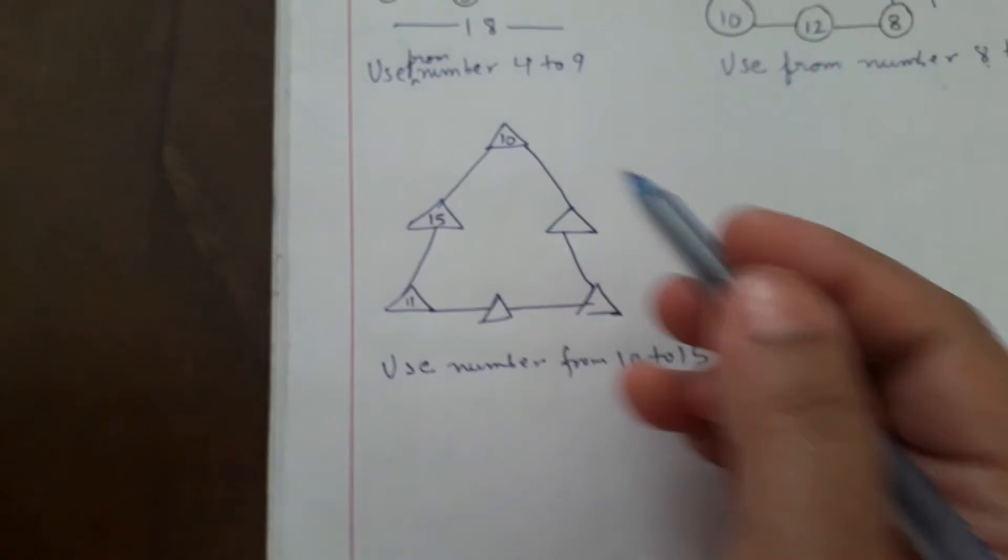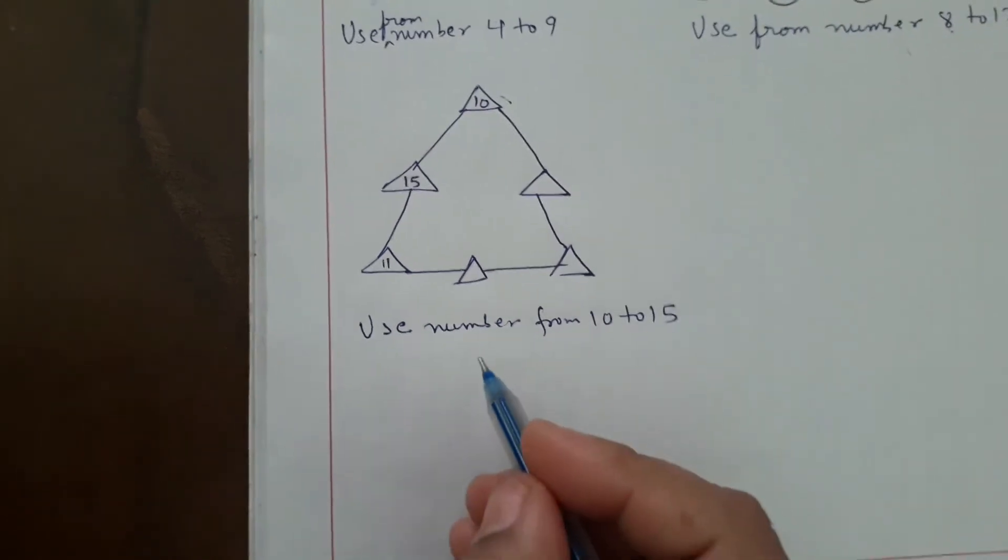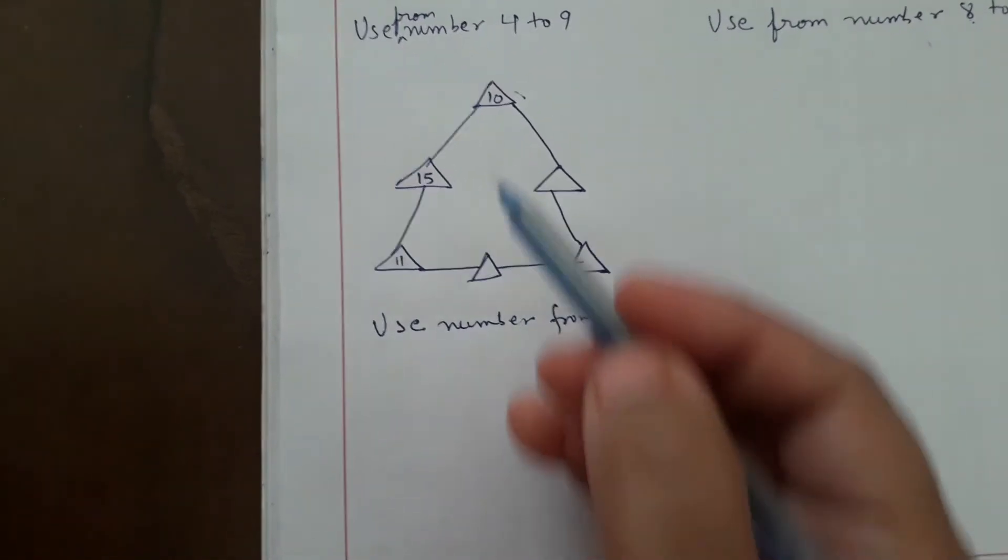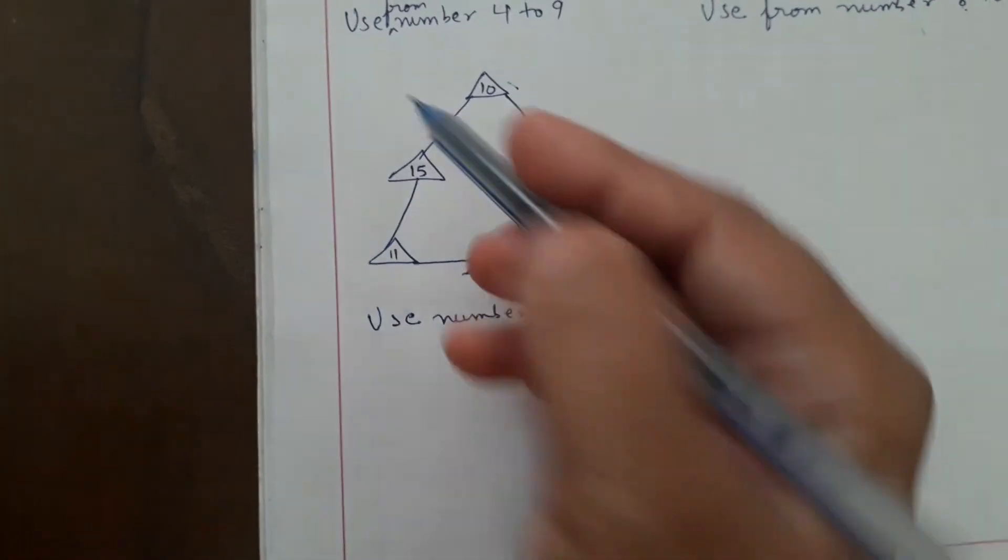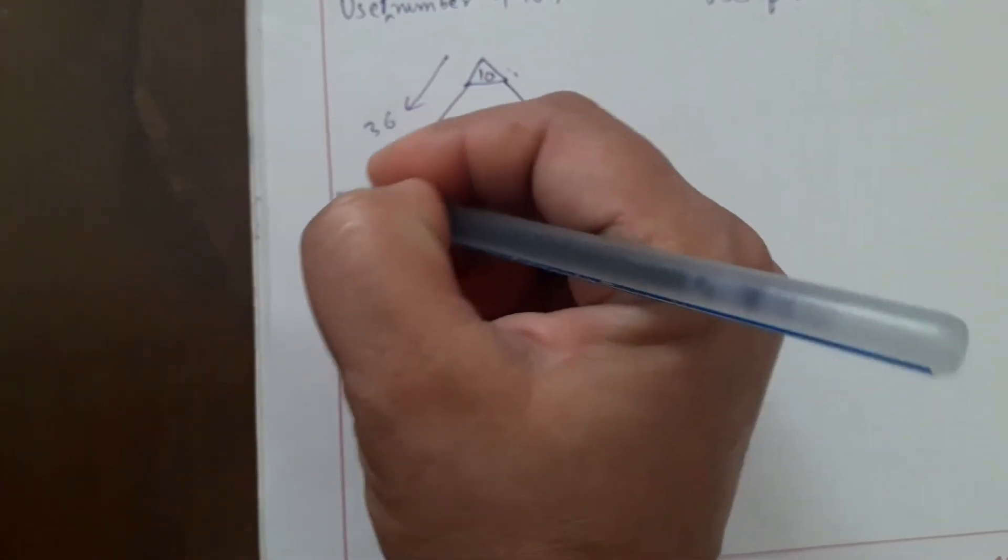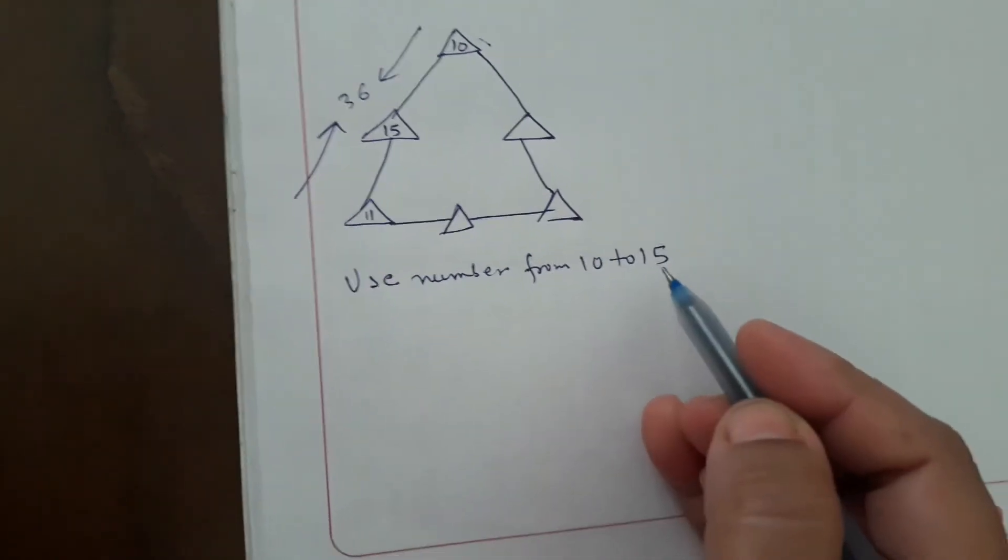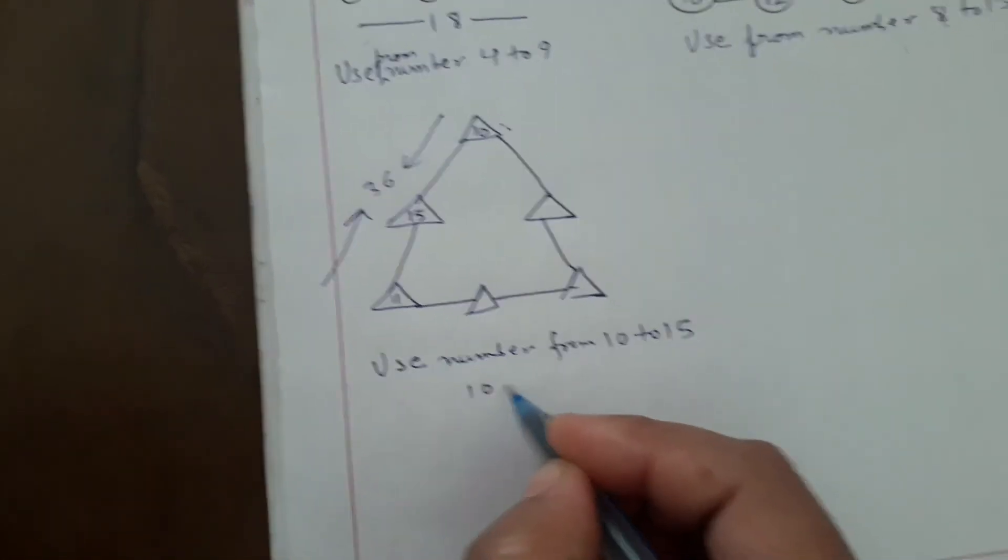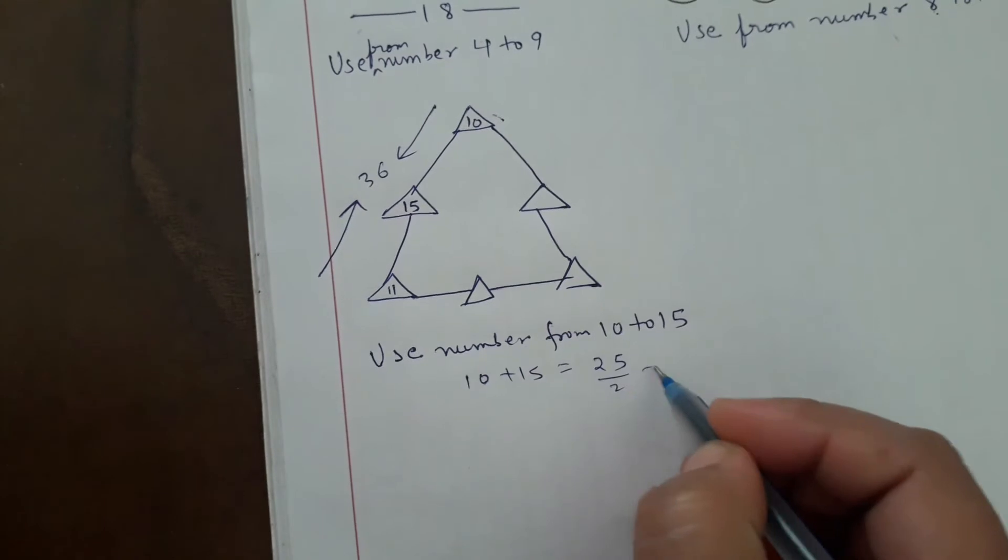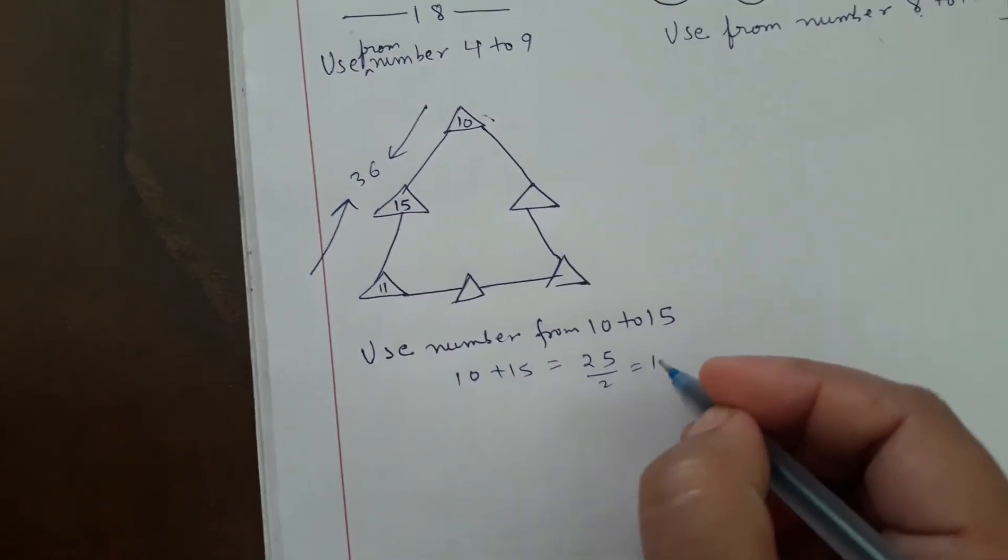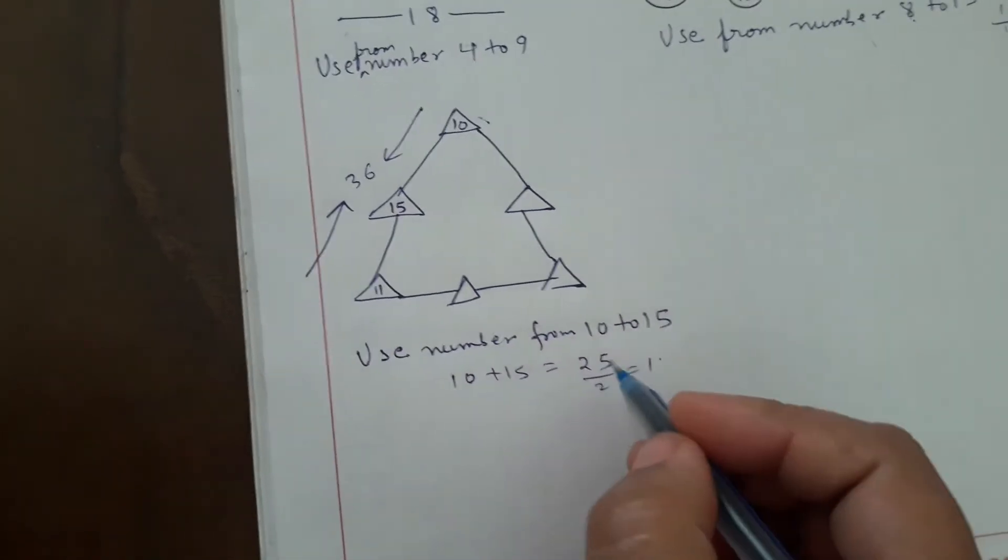Let's take one more question. Here we have three missing blanks using numbers from 10 to 15. First we add this number: 10 plus 15 plus 11, it will come 36. Now what will be our next step? Whatever numbers are given, 10 and 15, we will first add this - it will come 25. What is half of that number? 25 will come to 12.5.